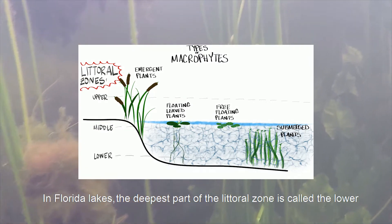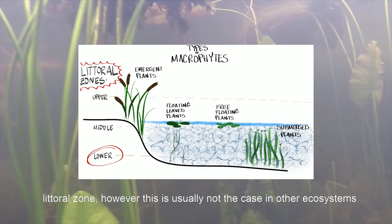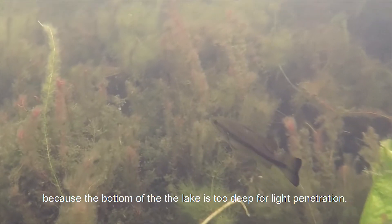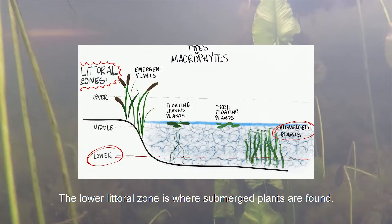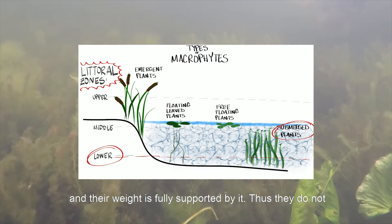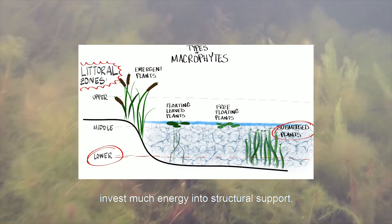In Florida lakes the deepest part of the littoral zone is called the lower littoral zone. However this is usually not the case in other ecosystems because the bottom of the lake is too deep for light penetration. The lower littoral zone is where submerged plants are found. Submersed macrophytes grow completely underwater and their weight is fully supported by it. Thus they do not invest much energy into structural support.